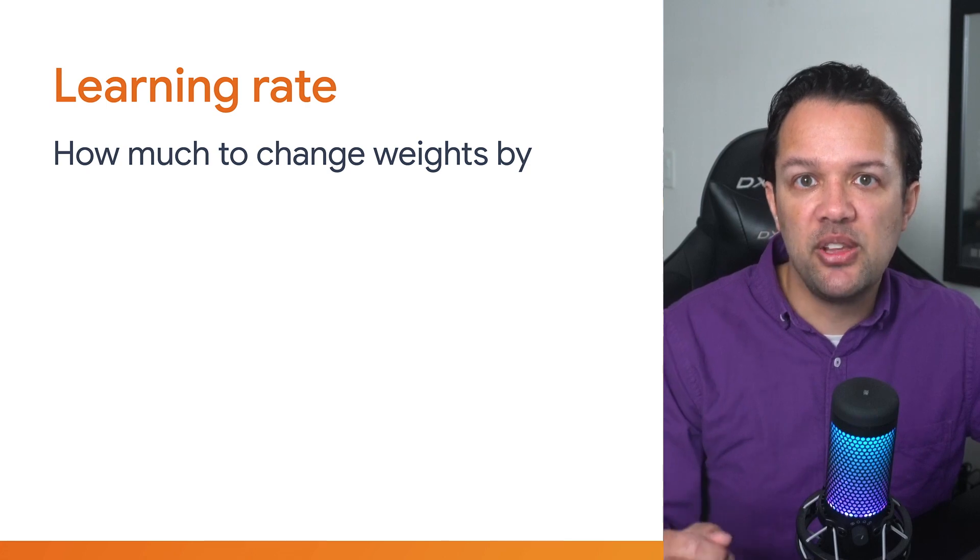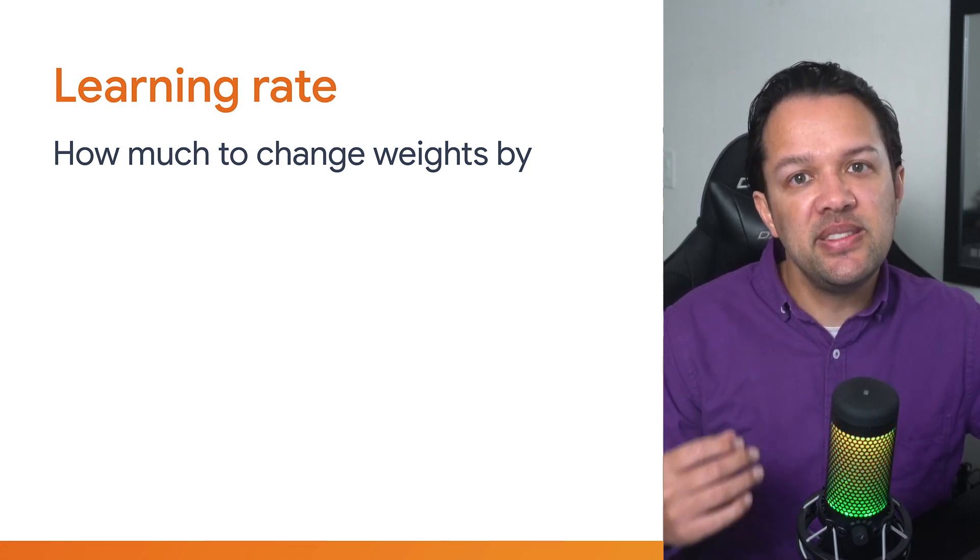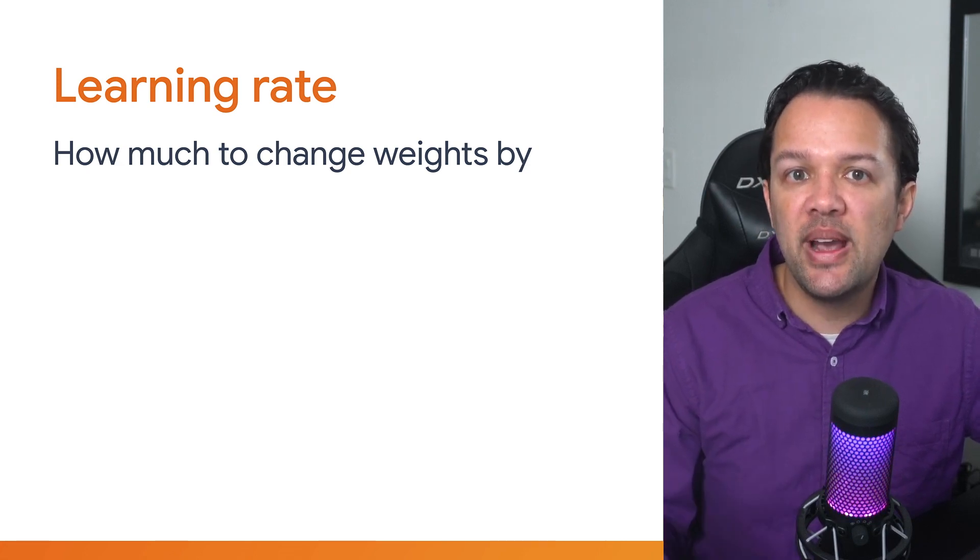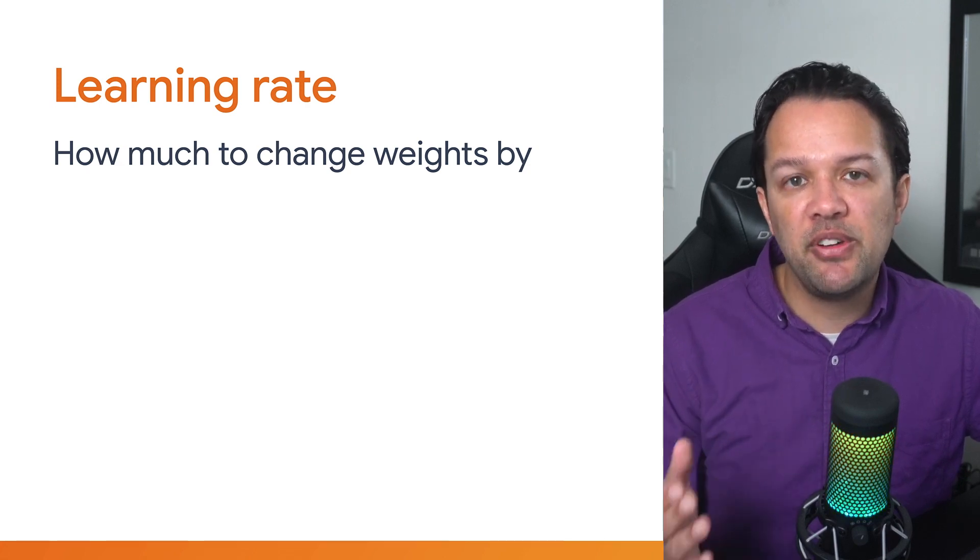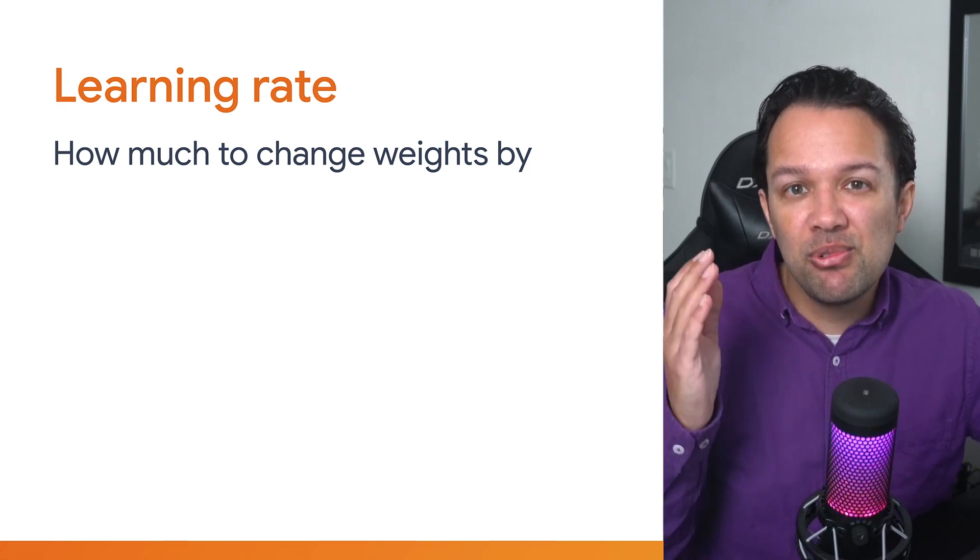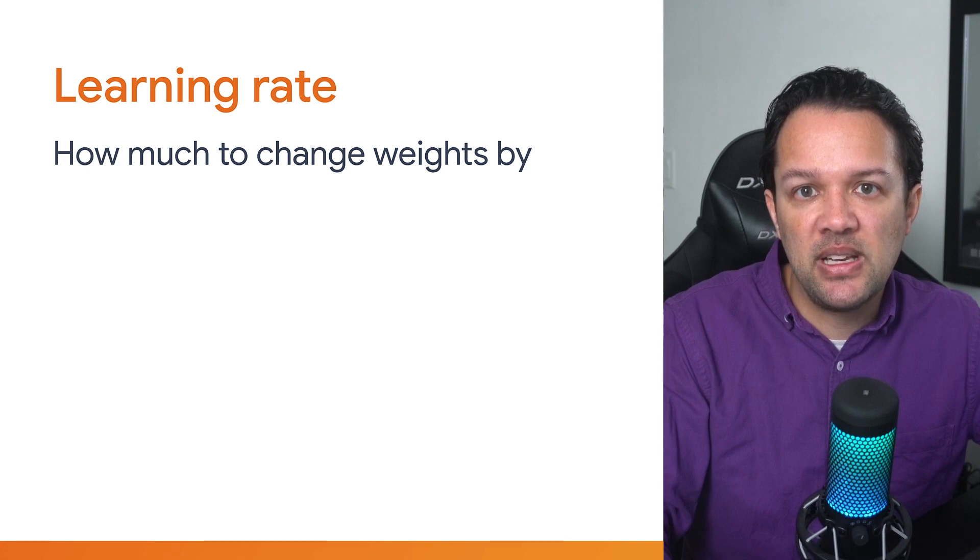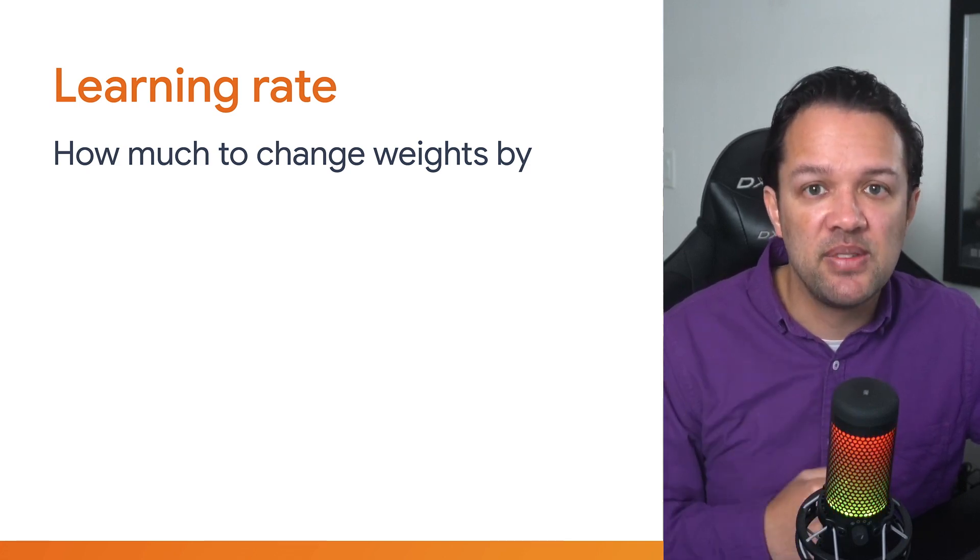The next concept to introduce at this point is something known as the learning rate. Essentially, this describes by how much to change the weights and bias in the model to try some new values. Setting a learning rate that is very large could lead to the neuron never finding a solution, and setting it too small could mean it might take a really long time to find the solution. Often, you'll need to experiment with this value to see what works well with your data, and it will change depending on the data that you're using.